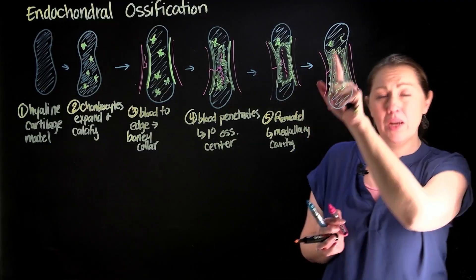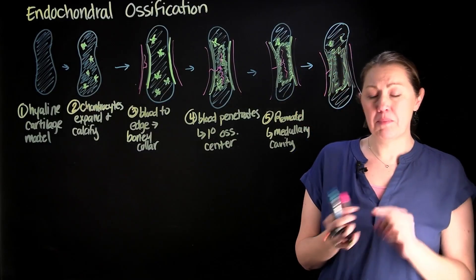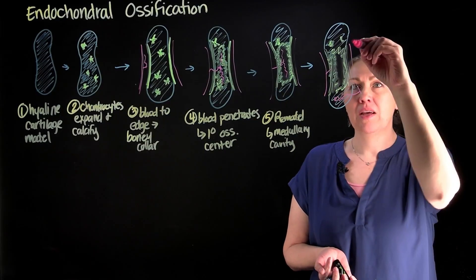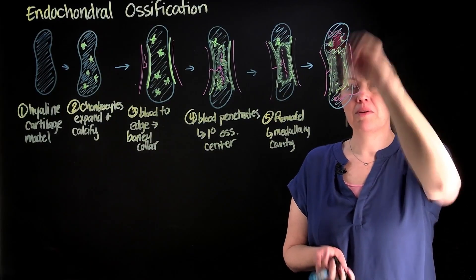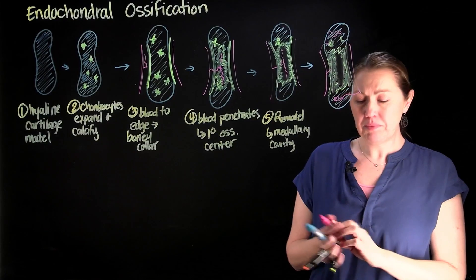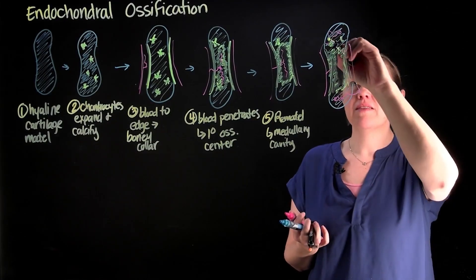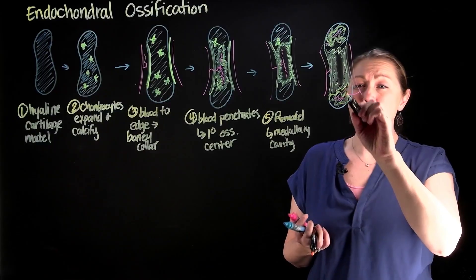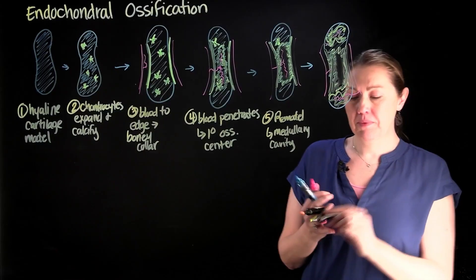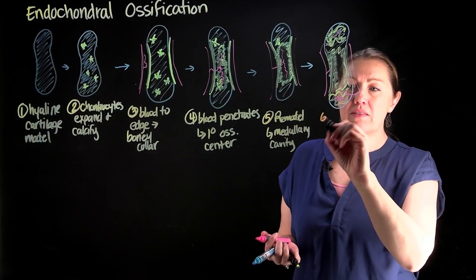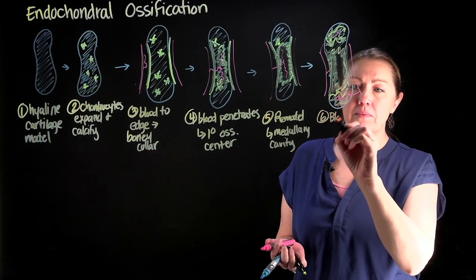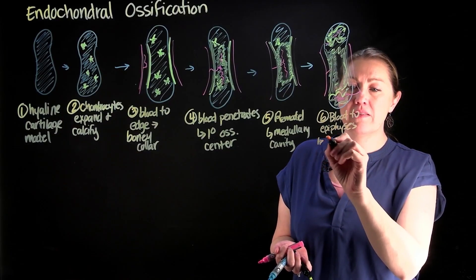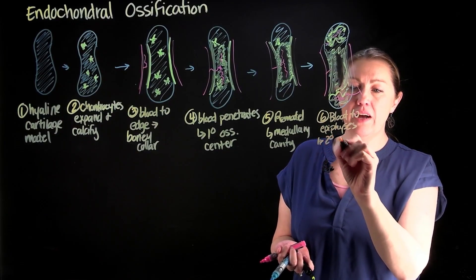If we want to put bone at the epiphyses, up at the ends, what do we need? We need more blood. So we'll have blood supplies up in our epiphyses, which allow us to make our secondary ossification center. This one is drawn a little messier because we're going to make spongy bone up there. Step six: blood to the epiphyses, which allows us to make our secondary ossification center.